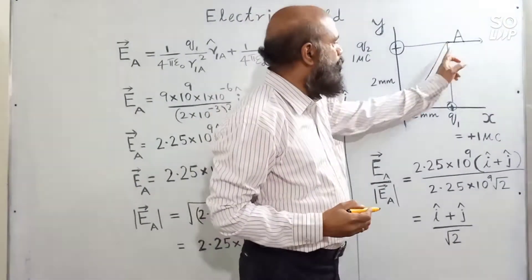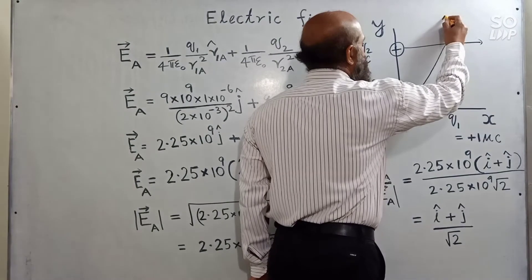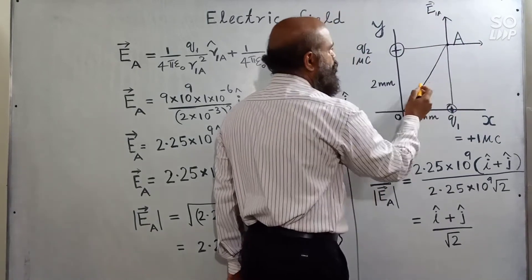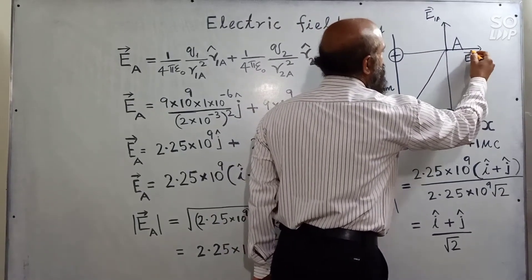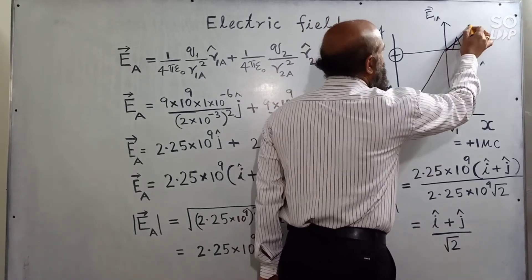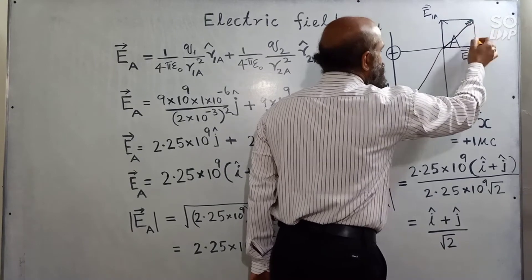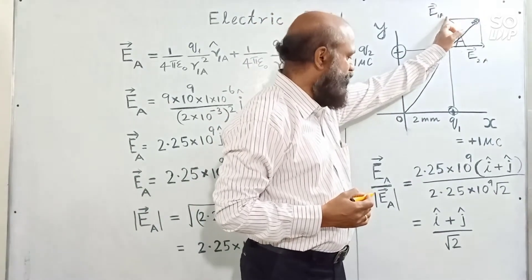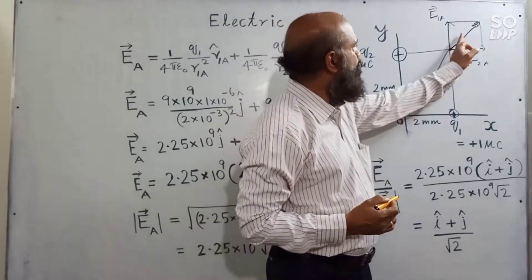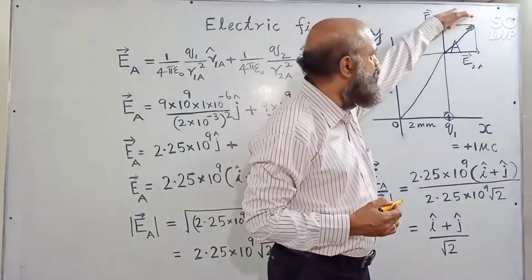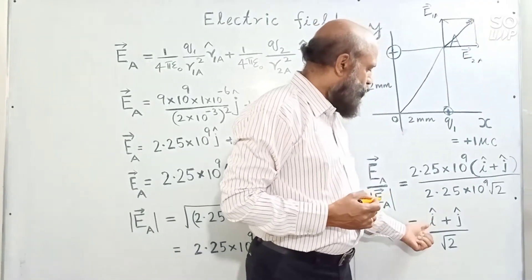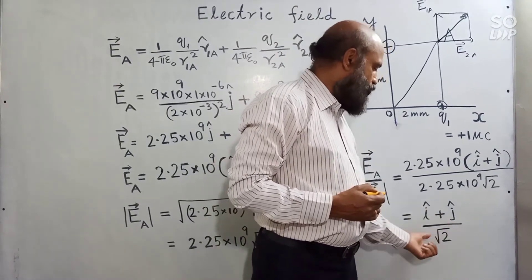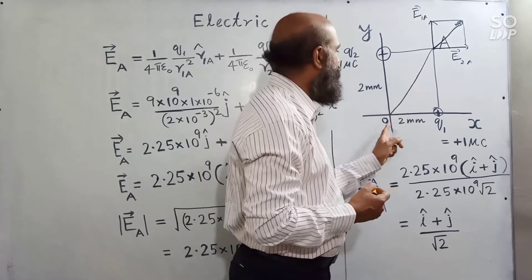The electric field due to the first charge is acting along this direction, that is E1A, and the electric field due to the second charge is E2A. The resultant acts along the diagonal direction. î is acting along the x-direction, ĵ is acting along the y-direction, so î + ĵ acts along the diagonal. By the triangle law of vector addition, î + ĵ divided by √2 is the unit vector acting along OA.